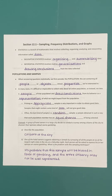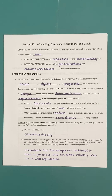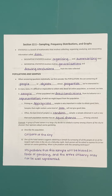The first thing we need to talk about is a population and then, from that population, samples. When answering questions statistically, we first consider the population. The population is the set containing all people or objects whose properties we're interested in — it's what we're describing ultimately.